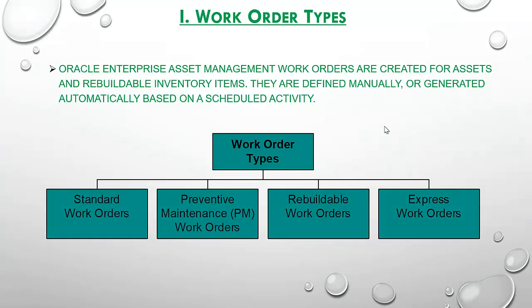What are the work order types? Standard work order, preventive work order, rebuildable work orders, and express work orders. Standard work orders are those that result from inspection requests. They are created manually referencing a maintenance activity, and they are created via the Work Orders form or Work Order page.